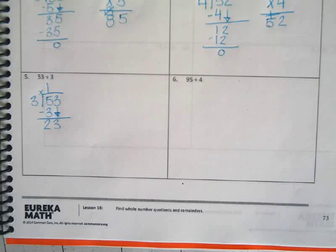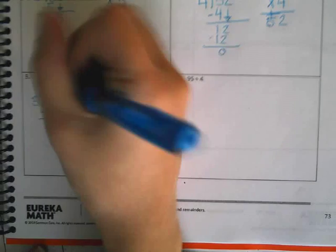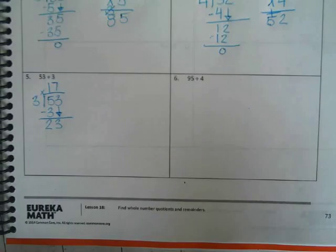And then I need to bring down my 3. Oh, what about this one? How many times does 3 go into 23? Maddie? 7. 7. 3 times 7 is what? 21.